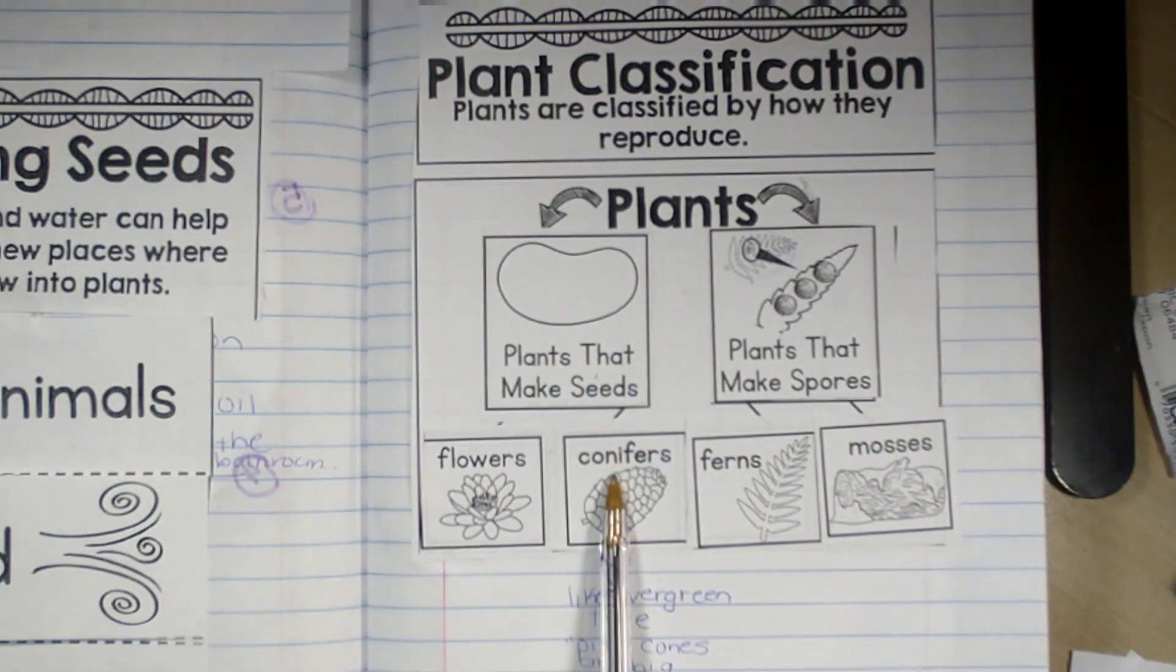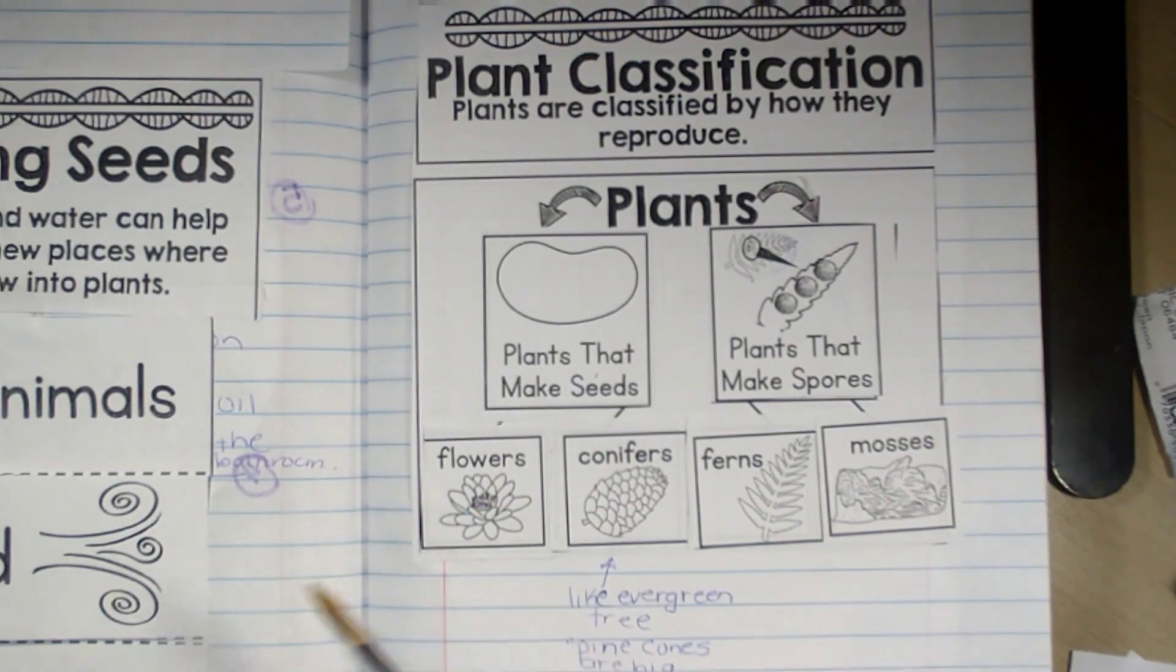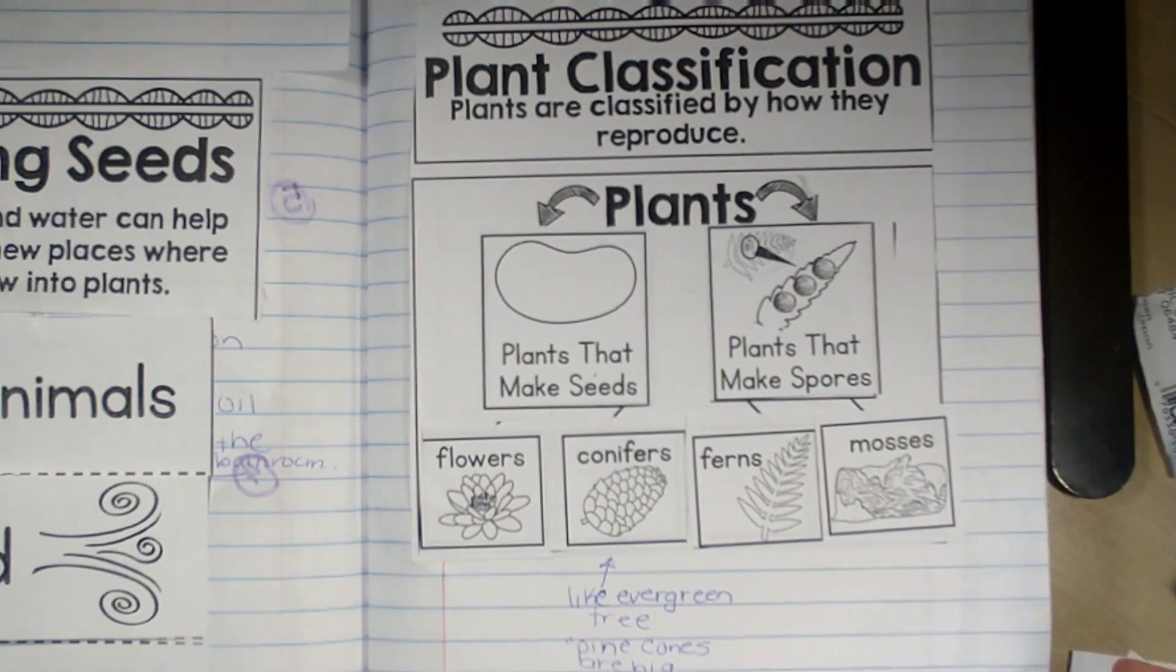Seeds, they have to be pollinated, just like when we talked about in the parts of the flower. They have to be pollinated in order to have the seed grow. So those are the main differences, how they reproduce.